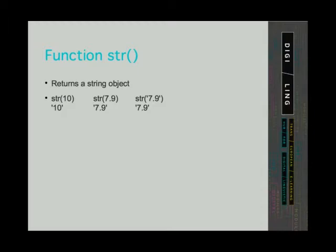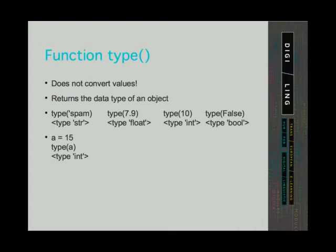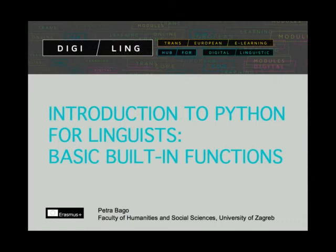The next function is not a conversion function but we will cover it nevertheless because it can be a very useful function. And that is the type function. The type function returns information about the data type of the object it is called on. So when you are not sure what is the data type of a variable or an object, you can test it with this function. For example, function type called on 7.9 will return a message that the type of our object is a float. So in this lesson we have covered three conversion functions: integer, float, and string, and function type which tells us the type of the object it is called on.